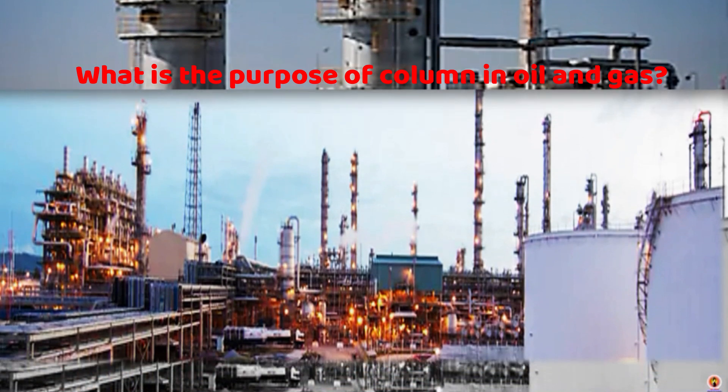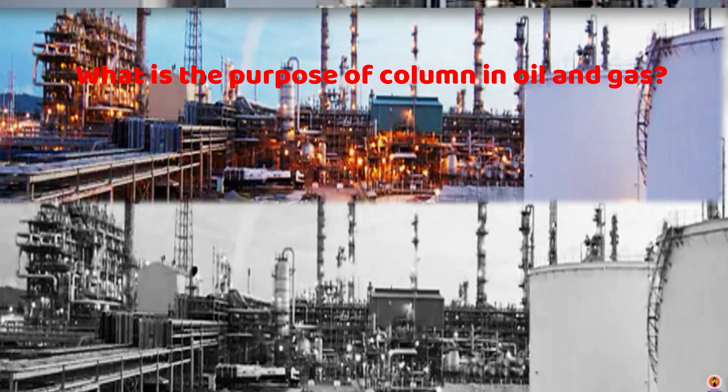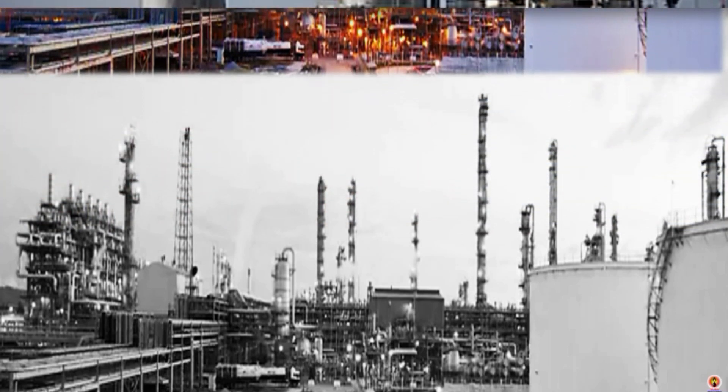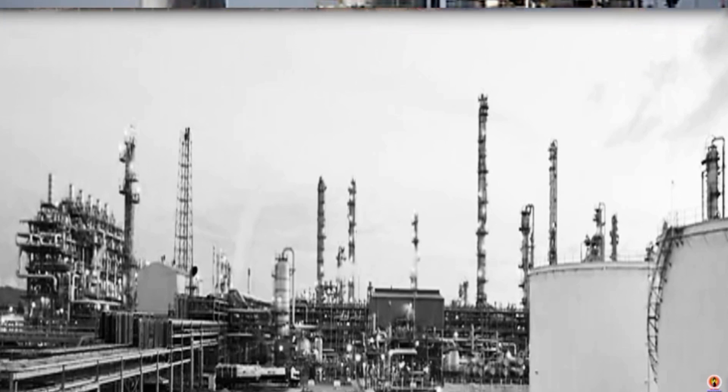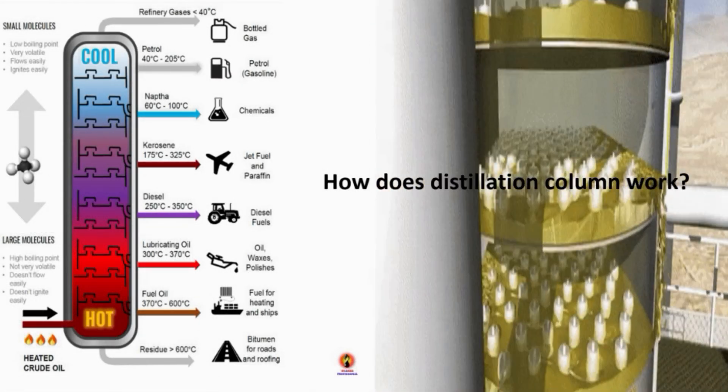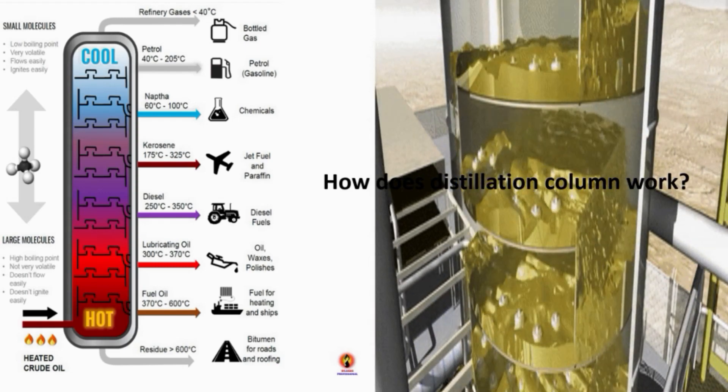Packing material is used to increase the surface area for mass transfer between gas and liquid phases during the distillation process. The process stream is heated before entering the column, which causes partial vaporization.